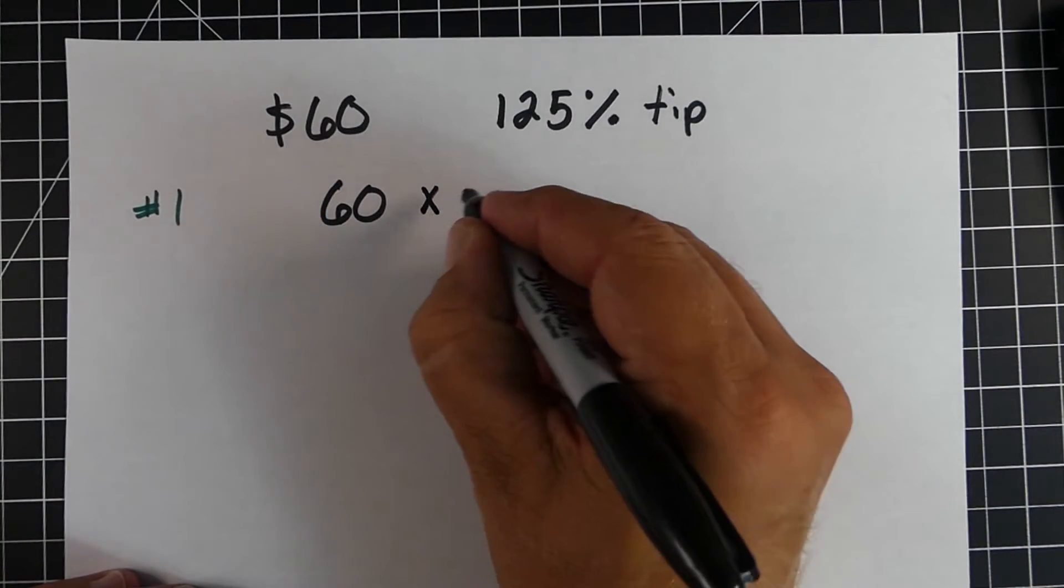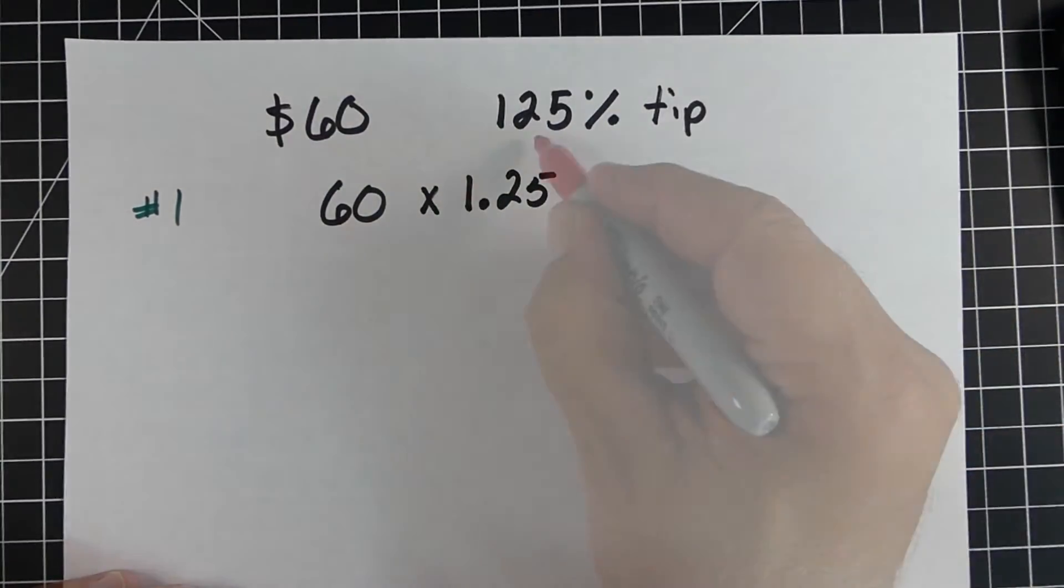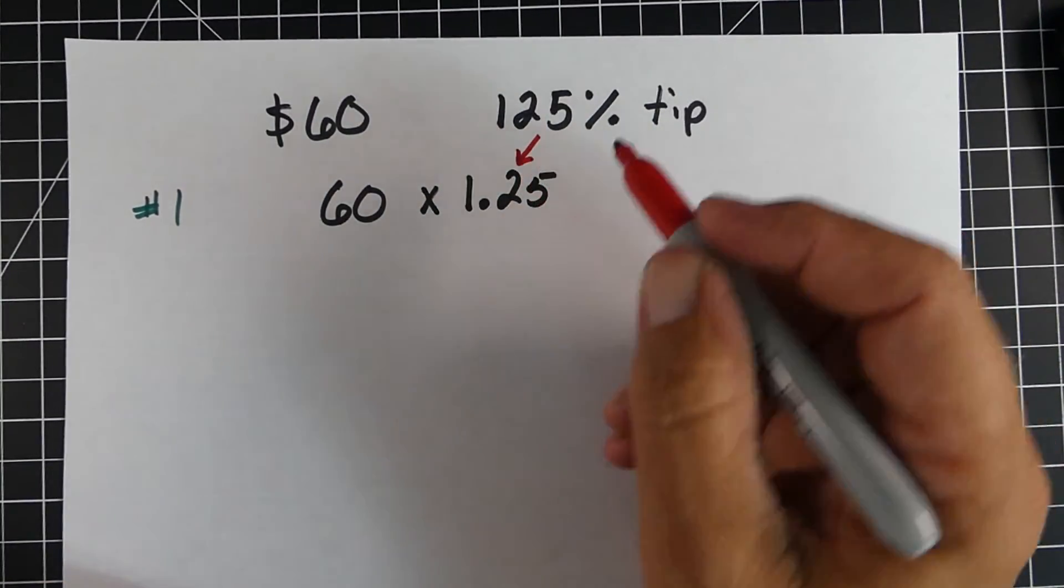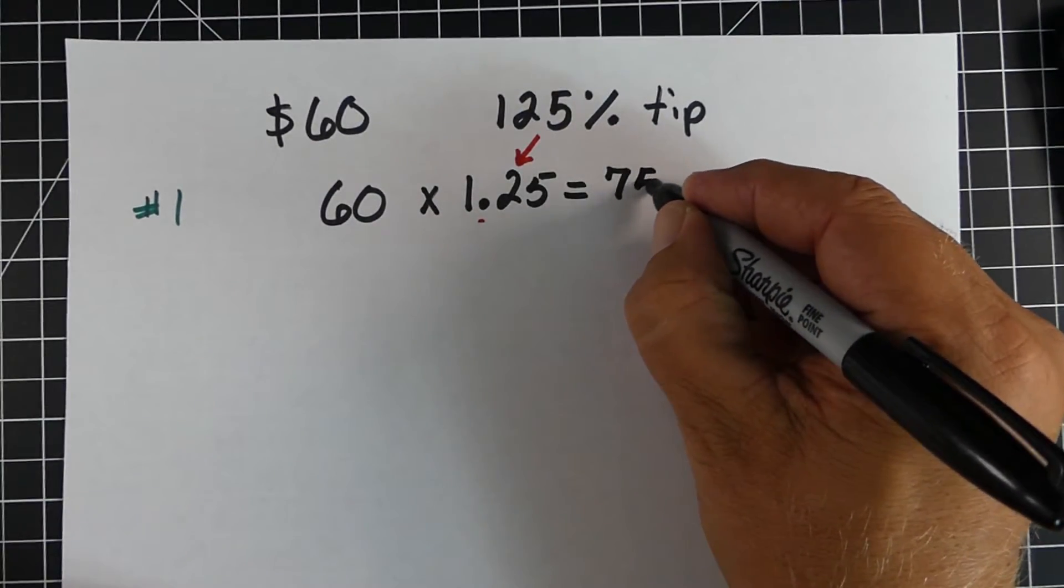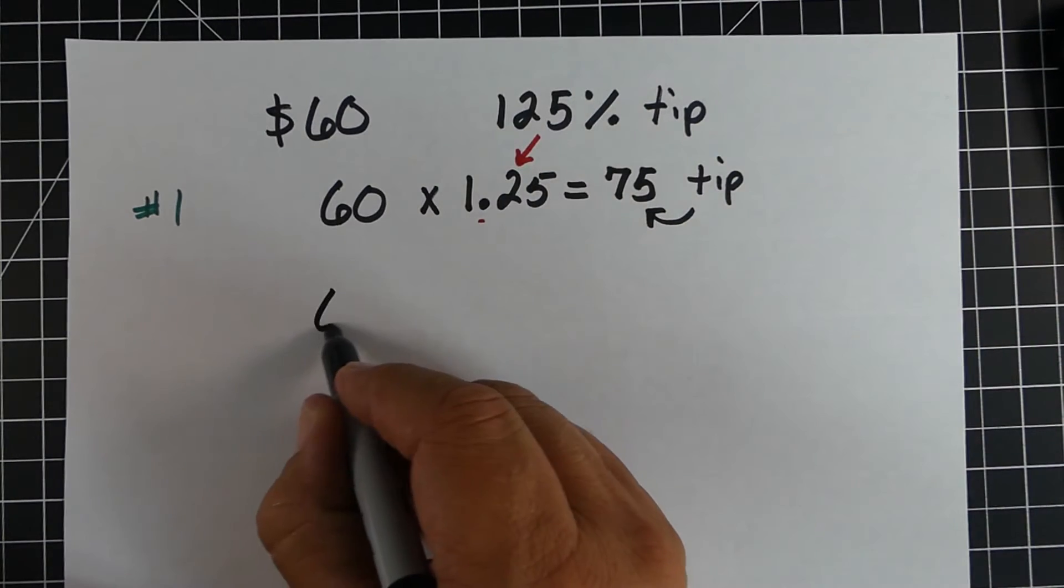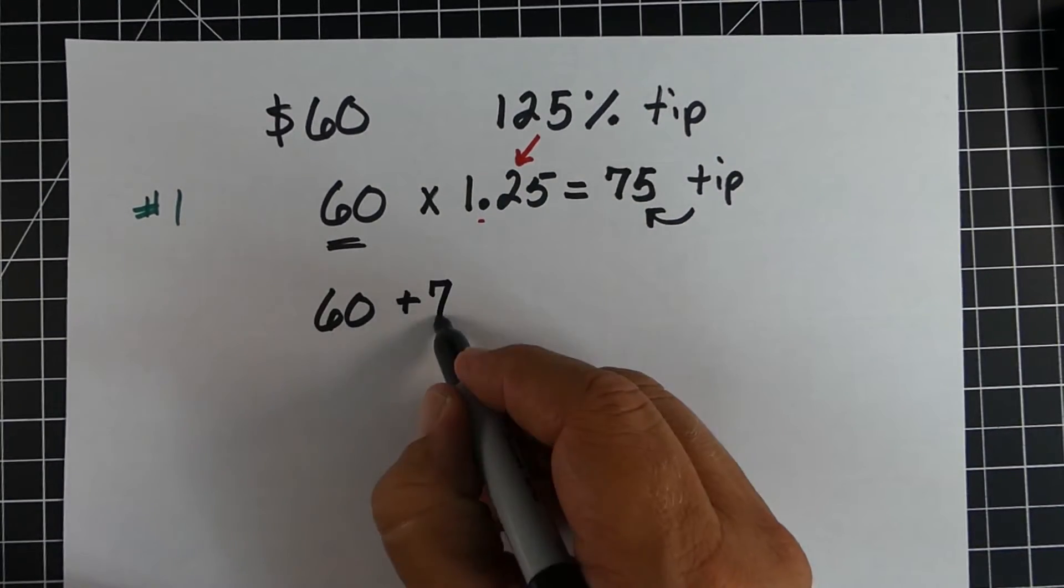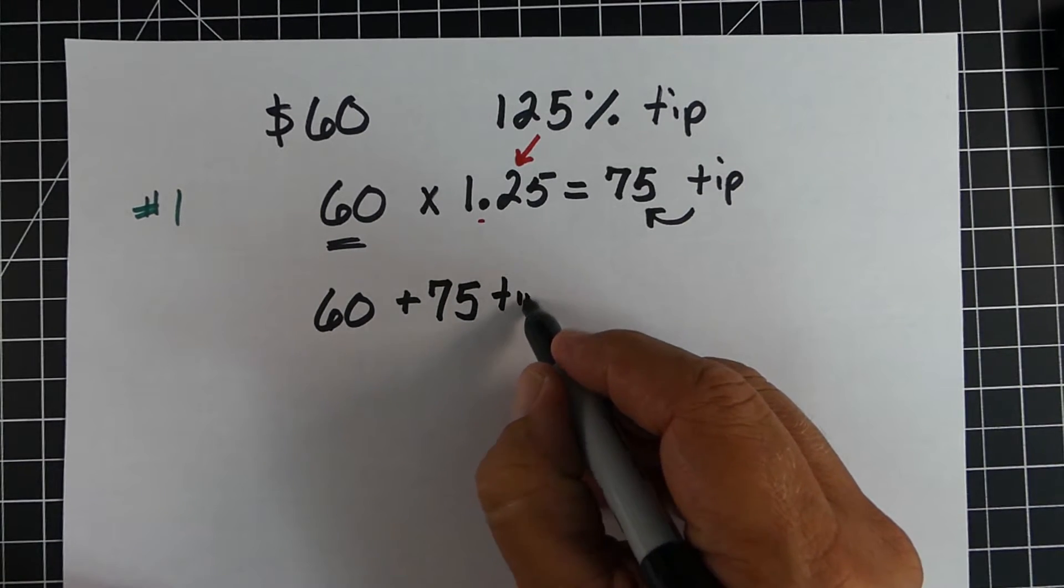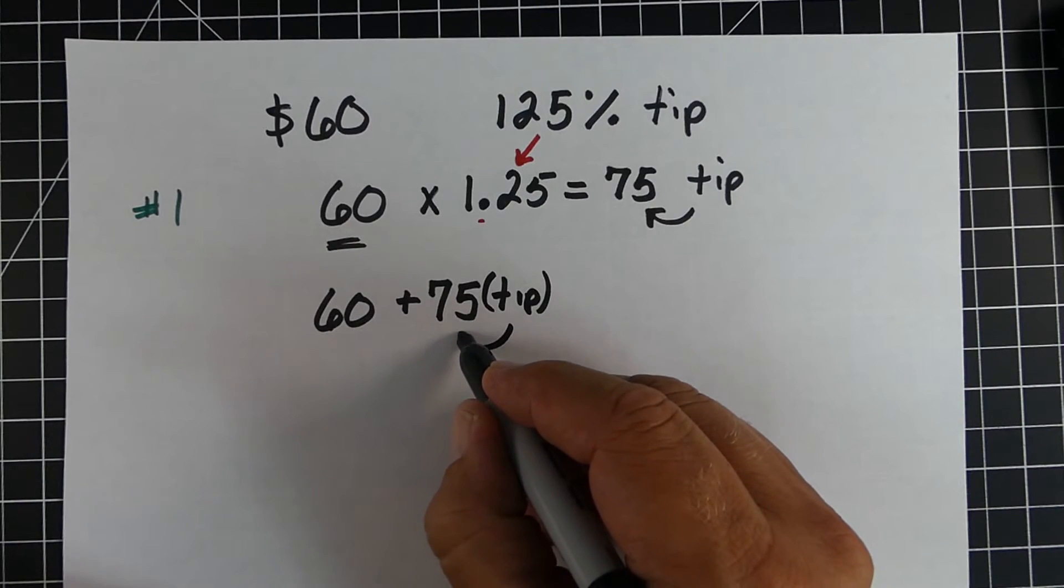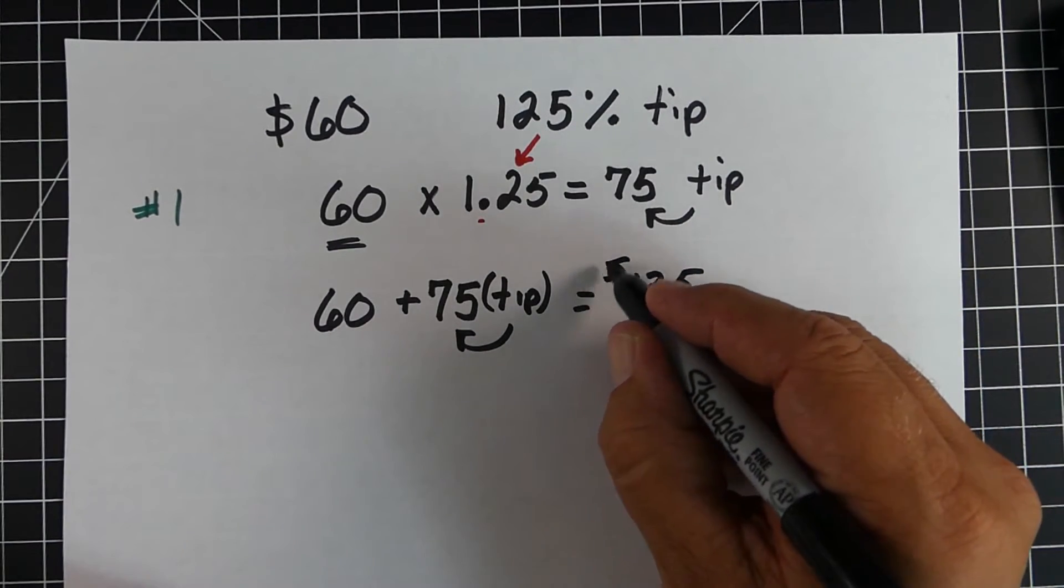All right, on our third and final example, we're back at the restaurant, and this time we're going to leave 125% tip on this $60 meal. So very, very generous. So using method one, we'd take the $60 times 1.25, and we get our $75, which is the amount of tip. That's quite a tip. To find the total cost, we take the $60 for the meal plus the $75, which is the amount of tip, and when we add those two together, we're going to get $135. So that's our cost with the tip.